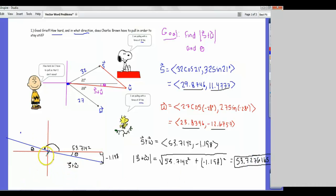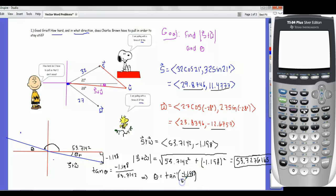But he can't just pull in any direction or else it'll still move. He's got to pull in the exact opposite direction, so we've got to find this angle. We can do that because the tangent of that angle is negative 1.198 divided by 53.7142. Tangent inverse of negative 1.198 divided by 53.7142.